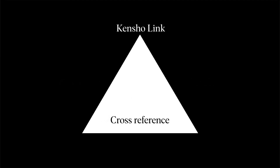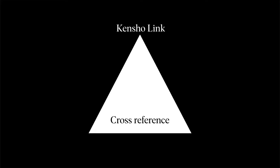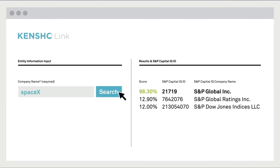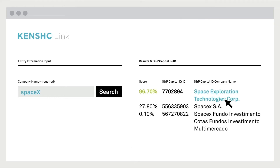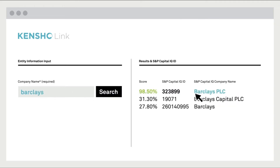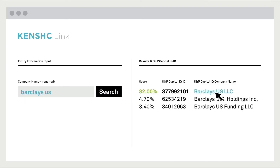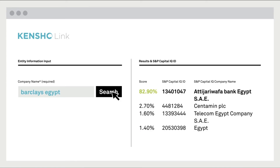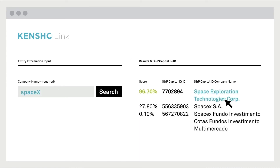Having clean and accurate data is essential. That's why we've enhanced our cross-reference solutions with the addition of Kensho Link, an AI-powered entity linking model designed to connect a user's company entities to the vast S&P Global universe of data. With as little information as a company name, Kensho Link works quickly to map that entity to a unique S&P Global identifier.